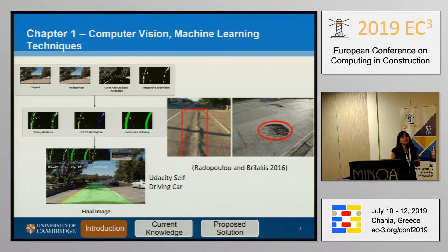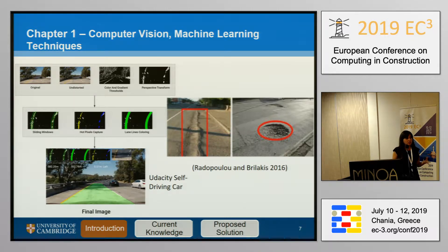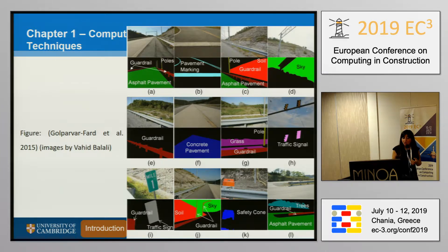There are computer vision and machine learning techniques that try to first capture the geometry of road assets, because most road assets have similar geometry. The second thing they do is capture the condition, checking if assets have any defects. For example, road lanes have similar geometry, potholes might have similar geometry, and light poles also have similar geometries — which makes the work very helpful.